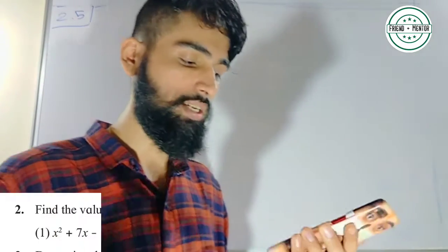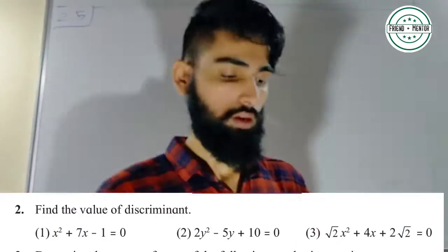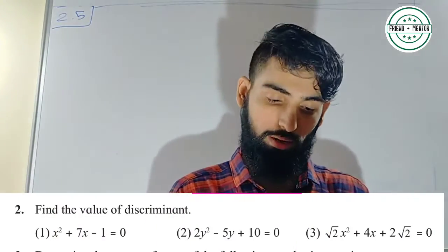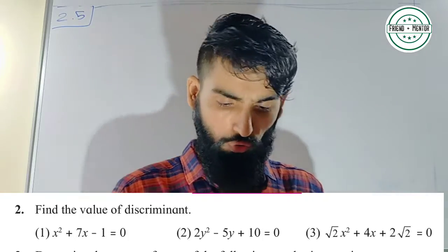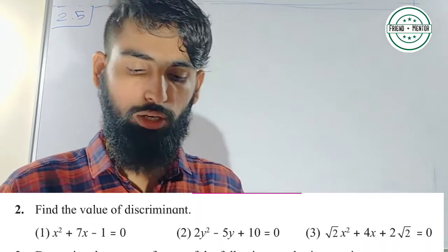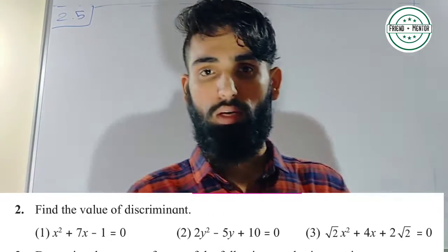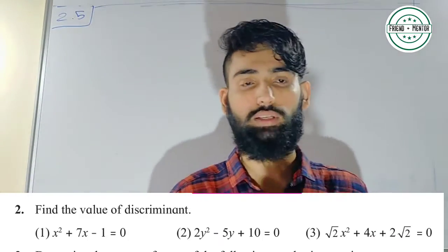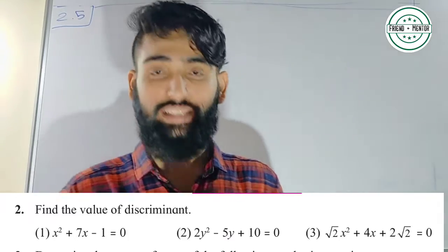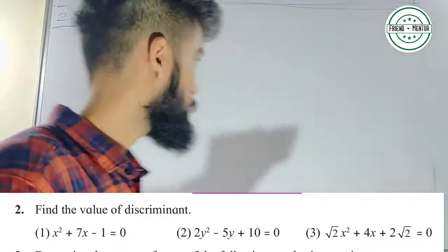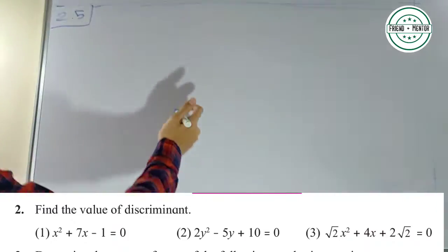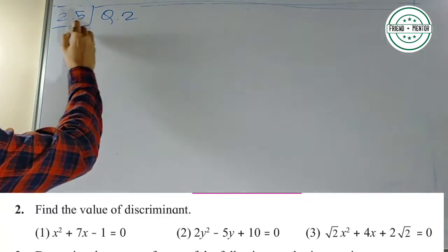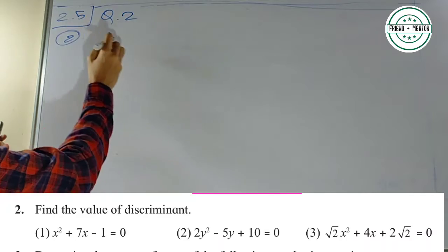Let's see question number 2: find the value of the discriminant. The first looks too simple, so that is an exercise for you students. Let's see question number 2 inside — let's see 2y² − 5y + 10 = 0.